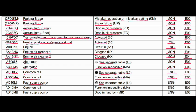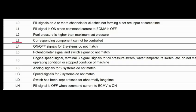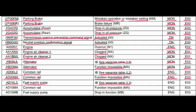Code AD10L3. Where is the problem? Fuel supply pump. What is the problem? See separate table L3. L3 means the corresponding component cannot be controlled. Code AD10MA — where is the problem? Common rail. What is the problem? Function impossible. Engine control system is related to this fault, and the action code is E03.